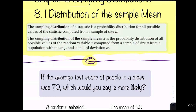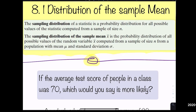The sampling distribution of the sample mean x-bar is the probability distribution of all possible values of the random variable x-bar computed from a sample of size n from a population with mean mu and standard deviation sigma.